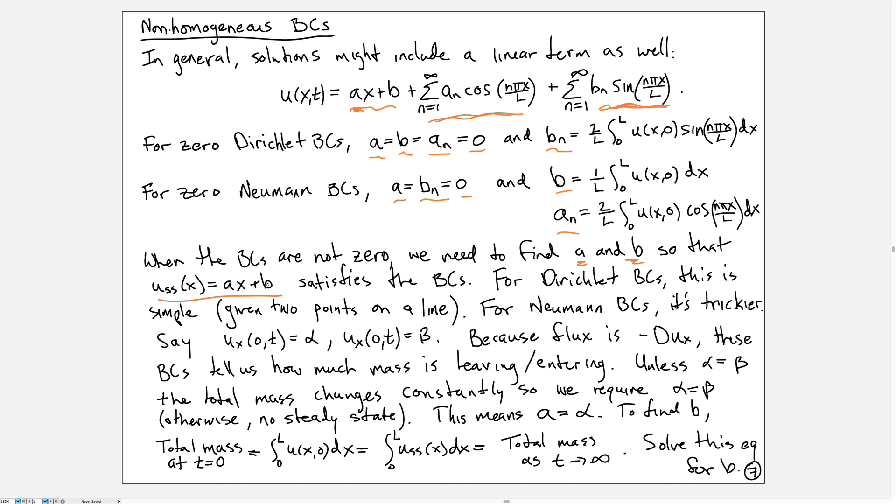We just have to choose ax + b to solve the non-homogeneous boundary conditions. For Dirichlet boundary conditions, we have a condition at zero and a condition at L, and that means we have two points. We just find the line that goes between those points.